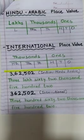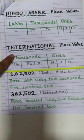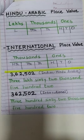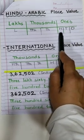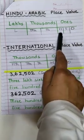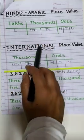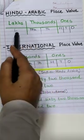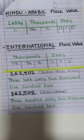The 2 types of place value system are Hindu-Arabic and International. In Hindu-Arabic place value system, the ones column is divided into 3 parts: ones, tens and hundreds, which we already know. The thousands column is divided into 2 parts: thousands and ten thousands. And then we get the lakhs column. We just learned this recently, right?